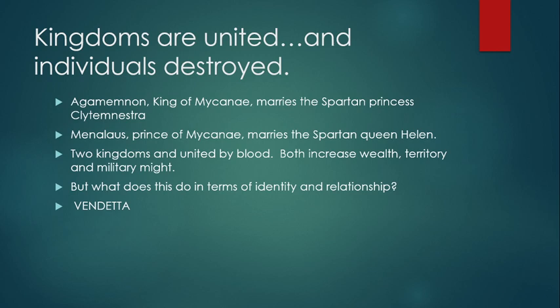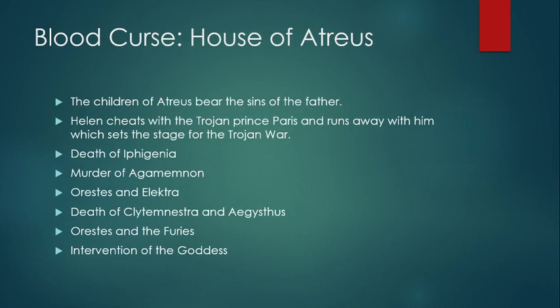But what does this actually do in terms of relationship when you have brothers marrying sisters? They become their own brothers-in-law, and things begin to get a little muddied up. Vendetta comes out of this — the eye for an eye, a tooth for a tooth. The children of Atreus bear the sins of their father. Helen cheats with the Trojan prince Paris and runs away with him, which sets the stage for the Trojan War.